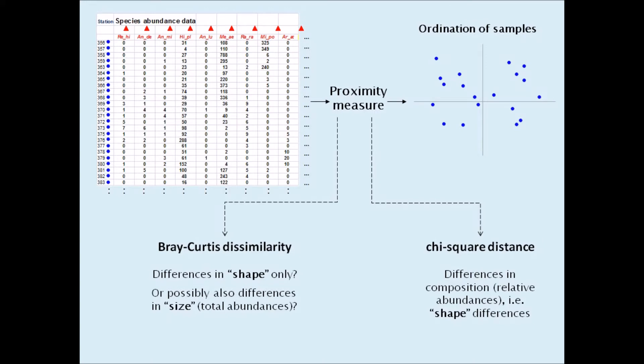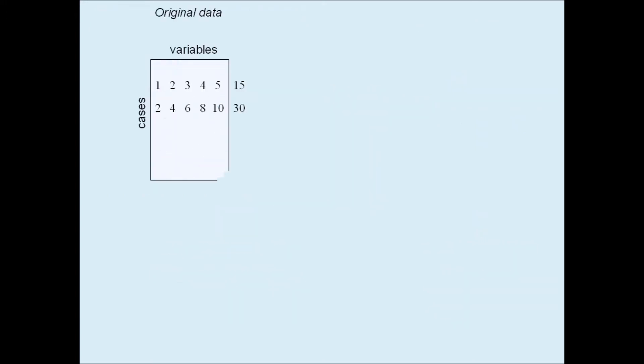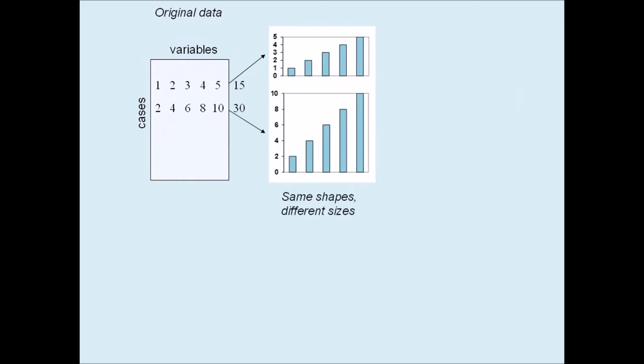A simple example shows that Bray-Curtis can be influenced by total abundances as well as relative ones. So suppose that there are two samples of species counts, with the second being twice the first: 1, 2, 3, 4, 5 adding up to 15, and 2, 4, 6, 8, 10 adding up to 30.